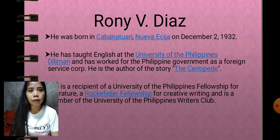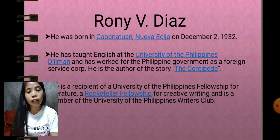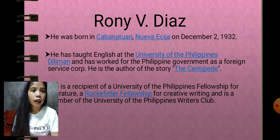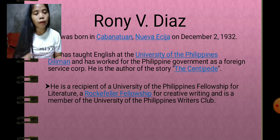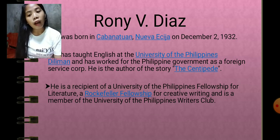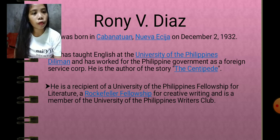In 'The Centipede,' the story follows two brothers and sisters. Dahlia's older brother got very angry at her because she hit the dog. Because of his extreme anger, something bad happened — at the end of the story, something terrible occurs to Dahlia's brother. Ronnie V. Diaz is also a recipient of a University of the Philippines fellowship for literature and a Rockefeller Fellowship for creative writing.